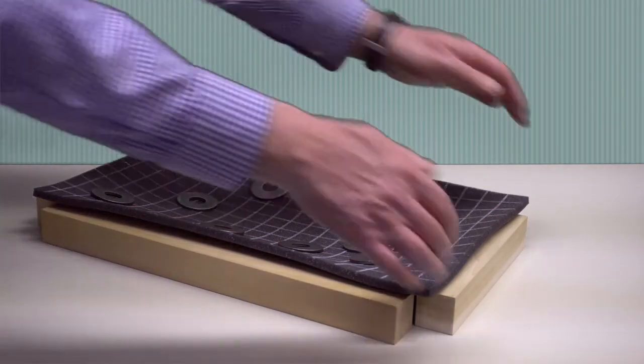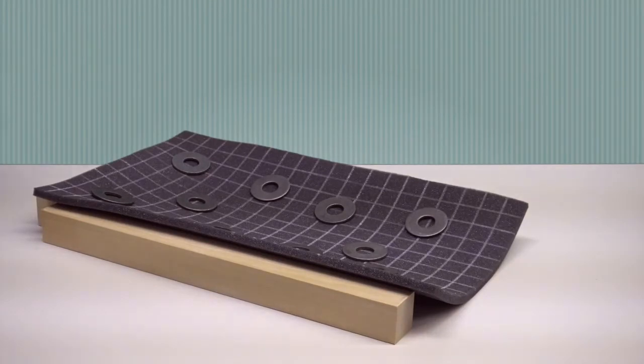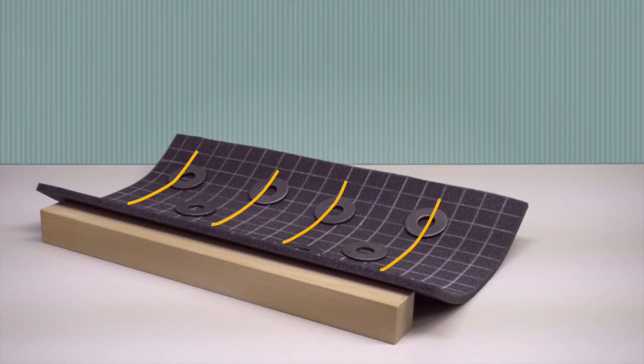If we remove one of the end supports, the plate deflects like this, and removing the other end support produces this result. Notice how bending occurs in only one direction.